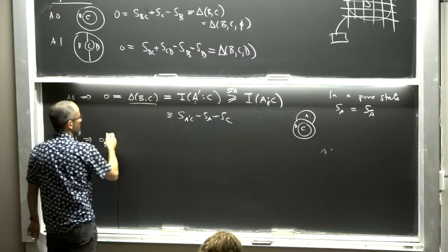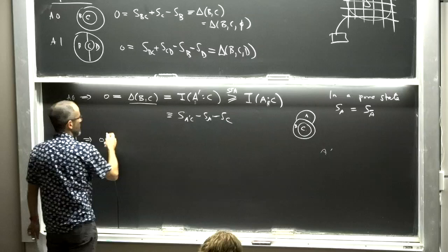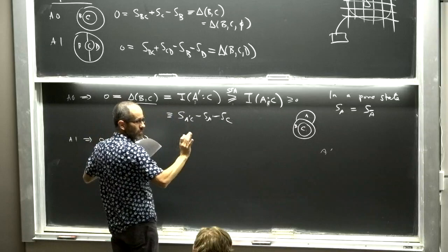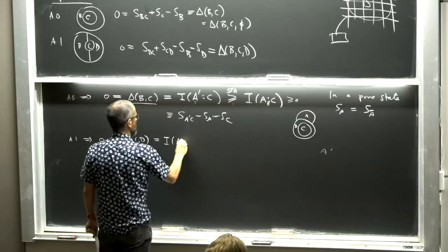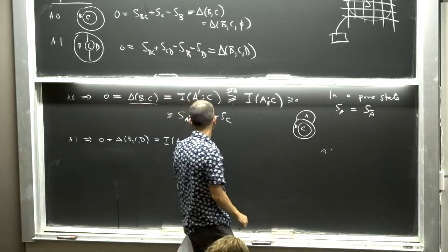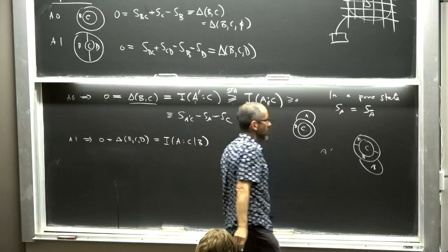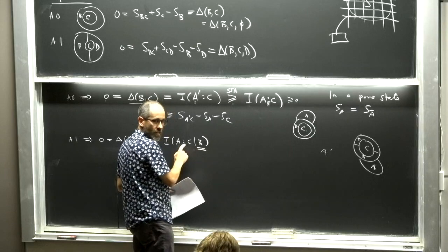A very similar argument from A1 says that the conditional mutual information between A and C given B equals zero, where B buffers A from C. This is true for any combination of regions where B buffers A from C. What we learn is that this is a very strict condition on the state, because mutual information between regions bounds from above the correlation functions of any operators supported in those regions.